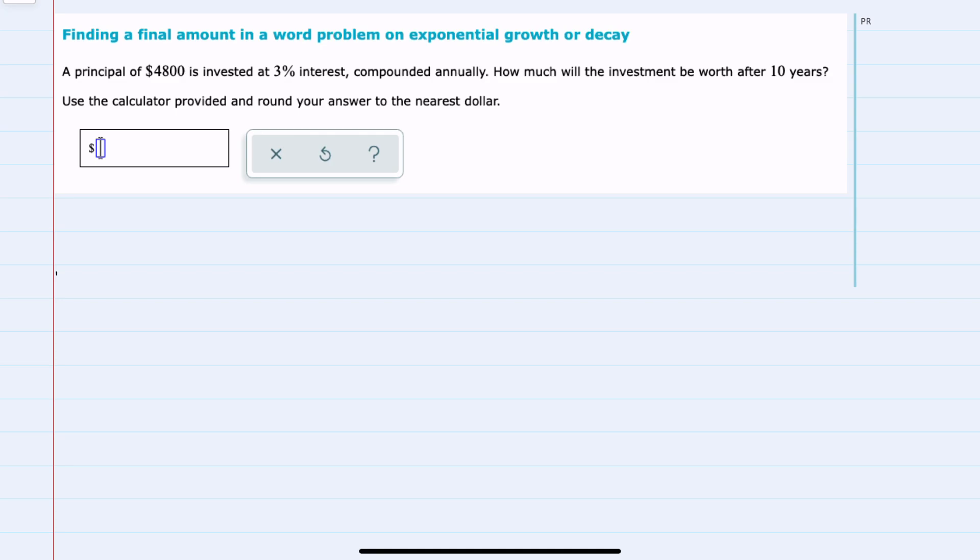For this example, we're told the principal of $4,800 is invested at 3% interest, and we're asked to find out how much the investment will be in 10 years and to round to the nearest dollar.